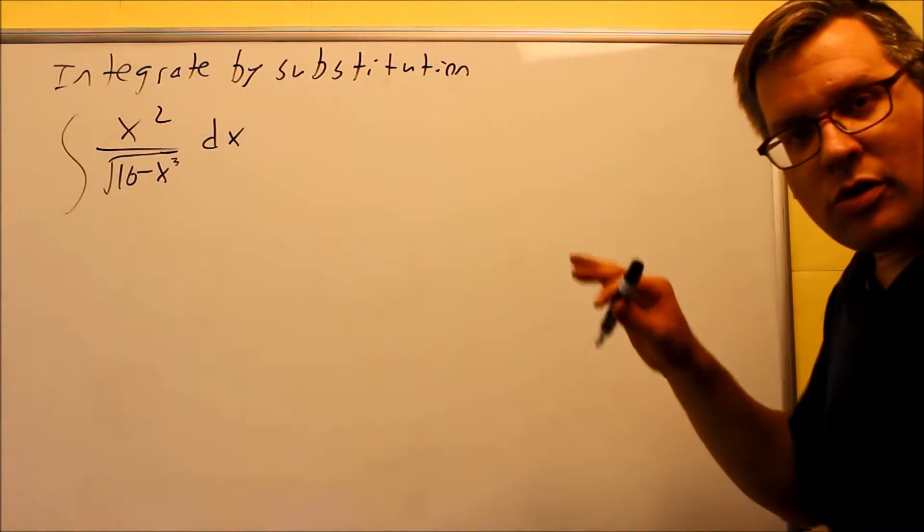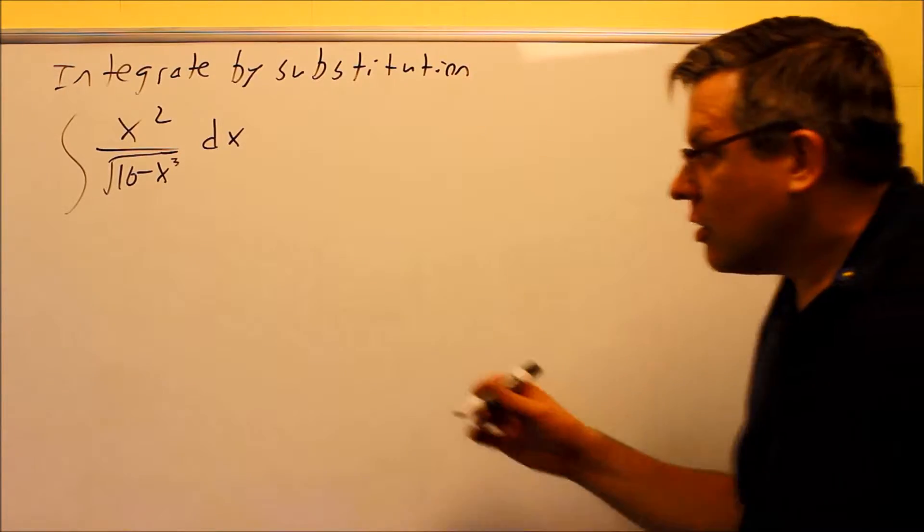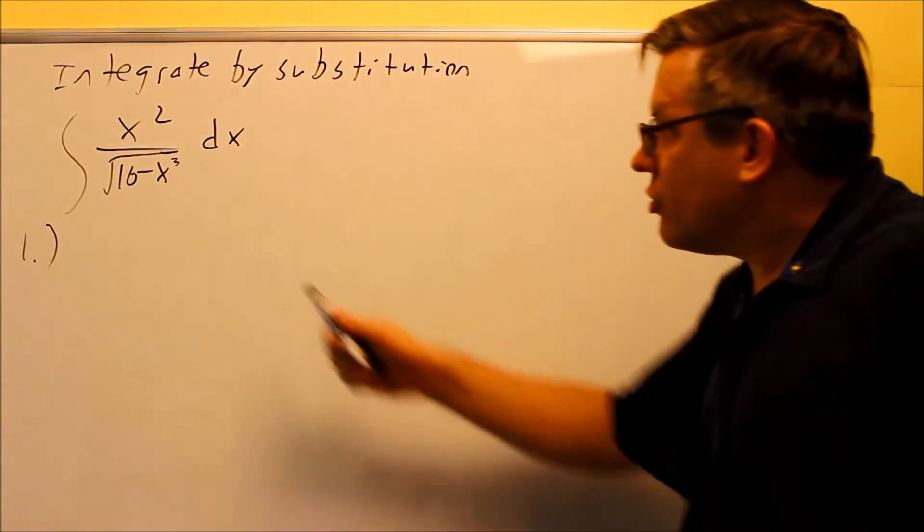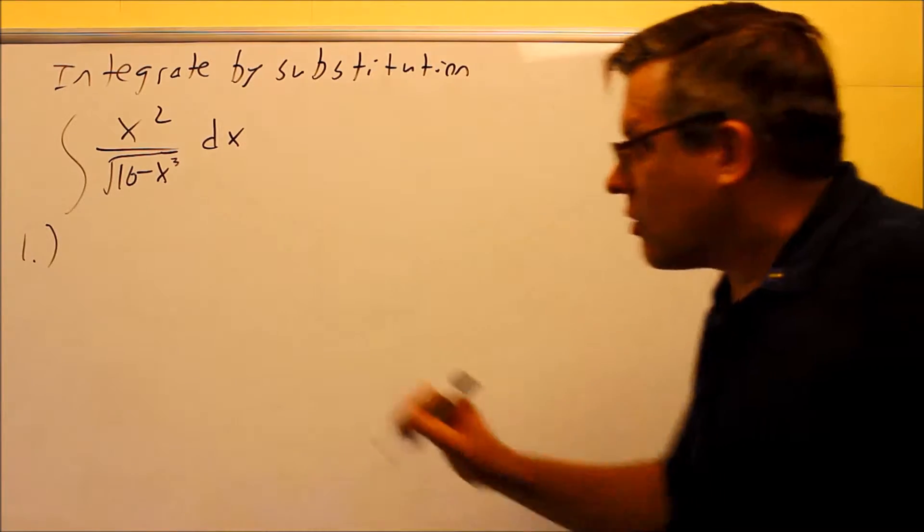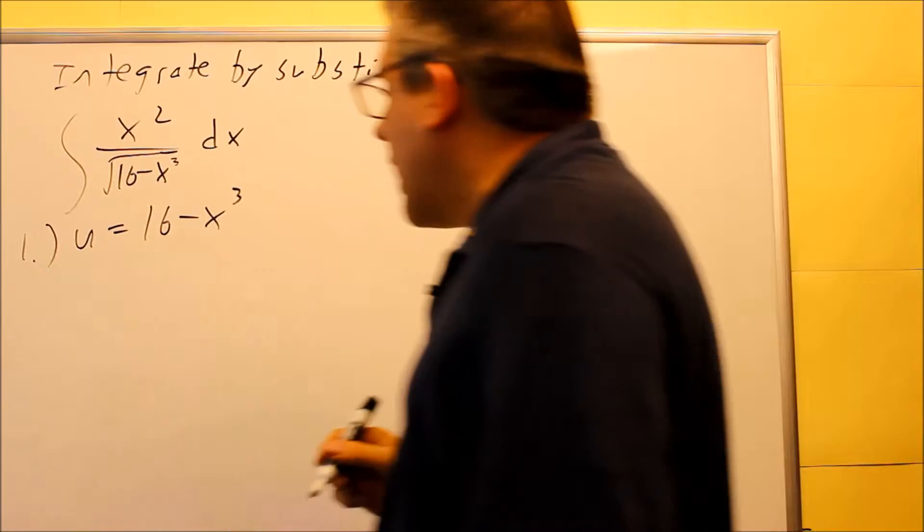Okay, so for this problem they don't tell us what the u is, so we have to come up with that on our own, and that's going to be our step number one. Step one would be to identify your u, and your u is usually something that's inside of something else, so we're going to say that u is equal to 16 minus x cubed.